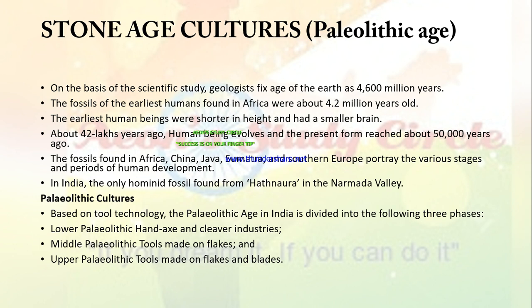Stone Age Culture. The first is the Paleolithic Age. On the basis of scientific study, geologists have fixed the age of the earth at 4,600 million years. The fossils of the earliest humans found in Africa were about 4.2 million years old. The earliest human beings were shorter in height and had a smaller brain. About 42 lakh years ago, human beings evolved, and the present form was reached about 50,000 years ago. Fossils have been found in Africa, China, Java, Sumatra and Southern Europe at various stages of human development.